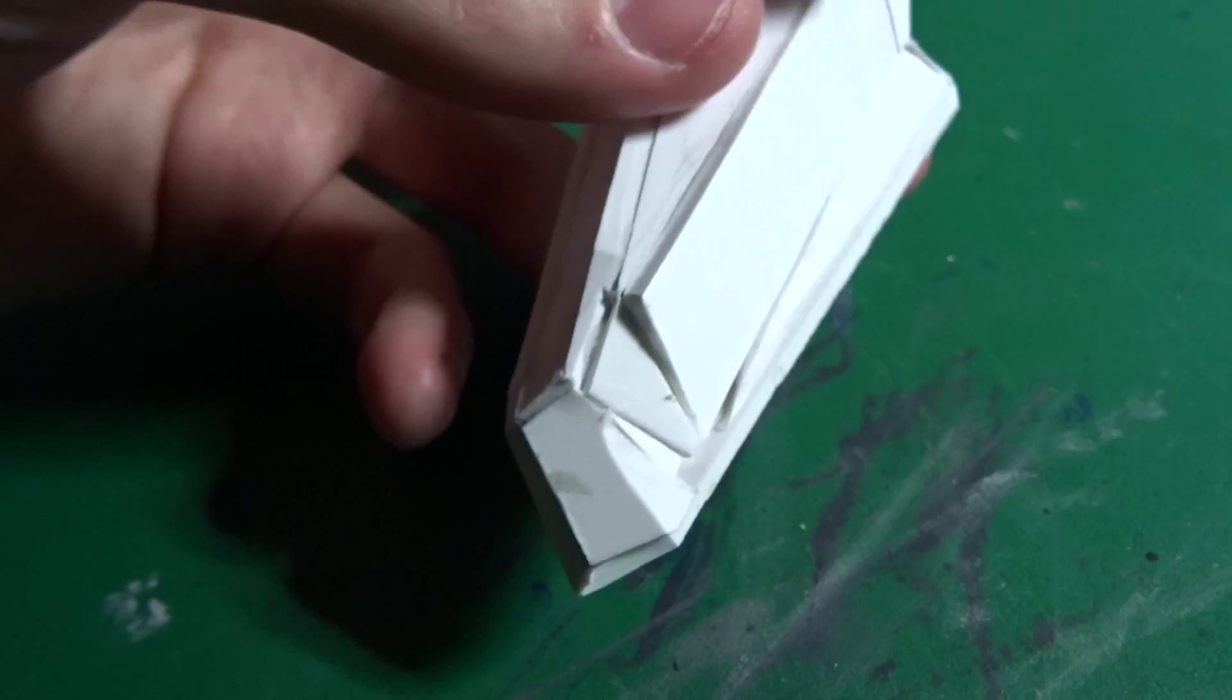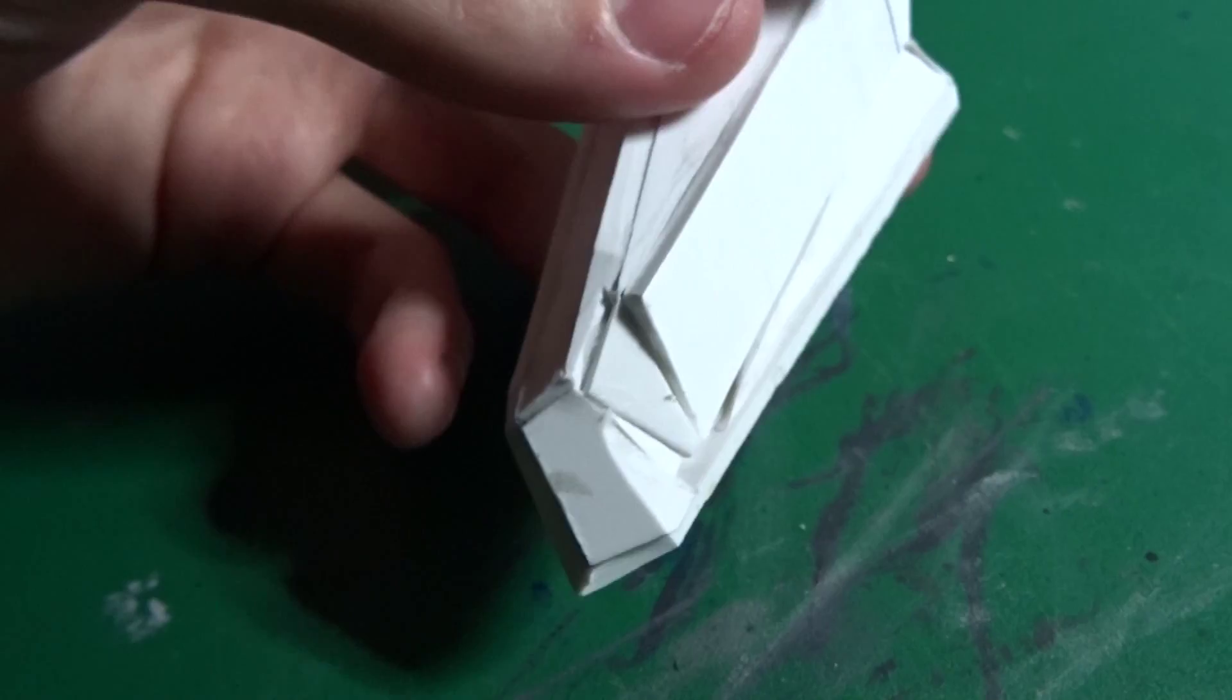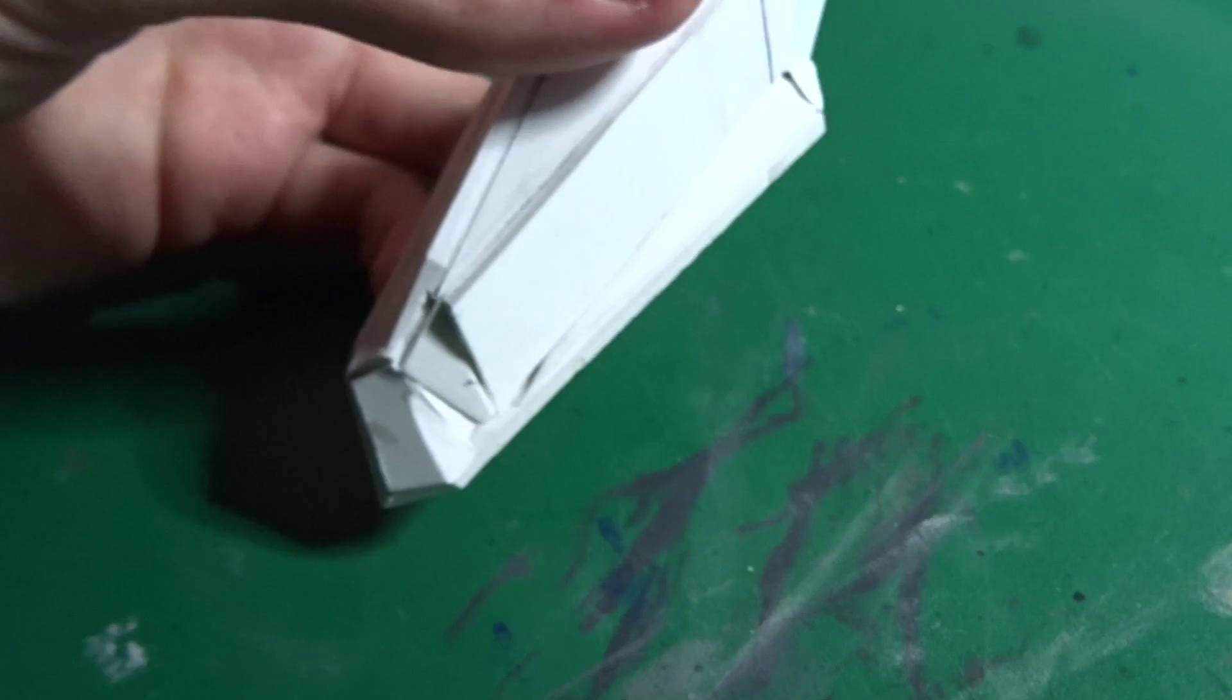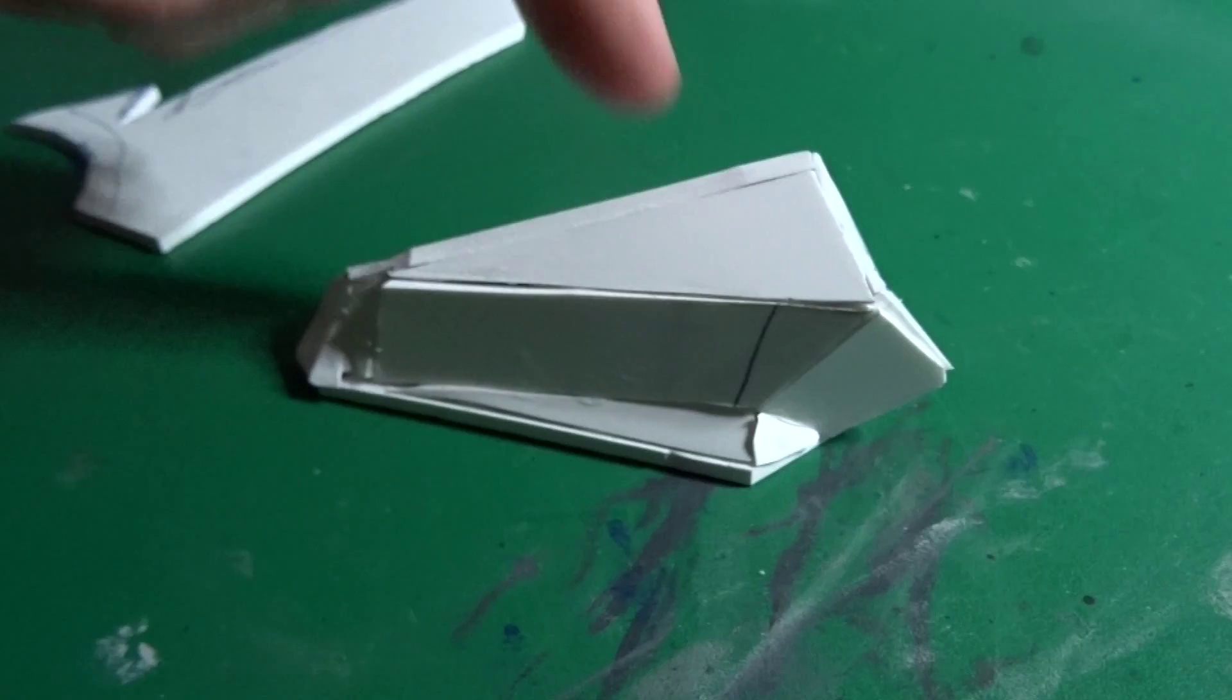I'm going to fill the gaps with green stuff, a two-part epoxy modeling putty, to make it look like one solid piece as opposed to a bunch of random panels glued together.